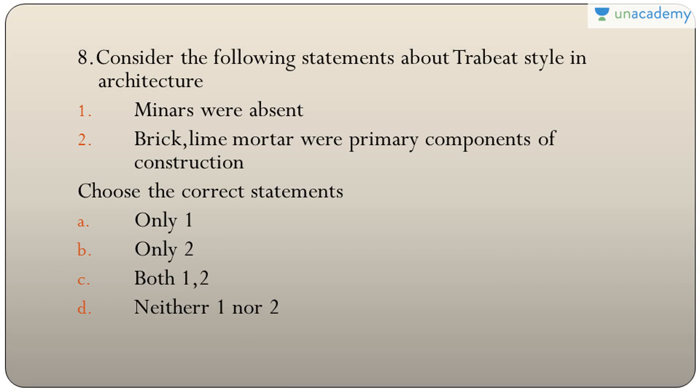Question eight: statements about trabiate style in architecture — minars were absent, and brick-lime mortar were primary components. Minars being absent is correct, but brick and lime were used in the arcuate style, not the trabiate style — trabiate style mostly uses stone. The answer is A — only one.